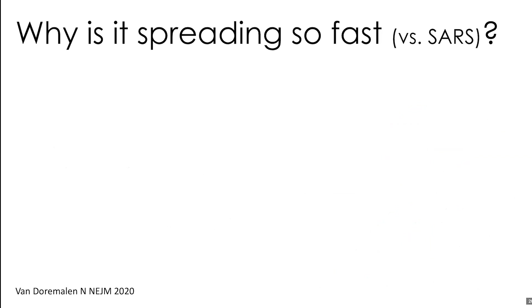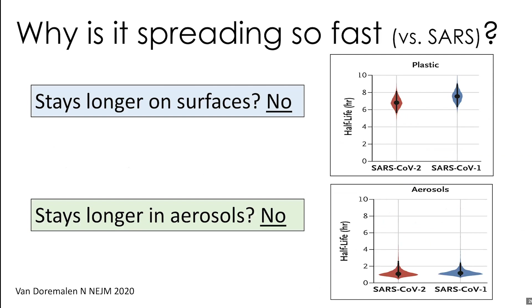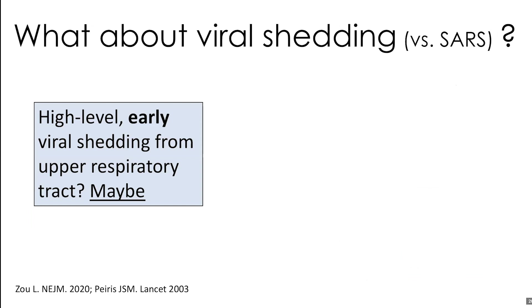Why is this coronavirus spreading so fast compared to the original SARS? A study looked at whether it stays on surfaces longer than the original SARS. The half-life on plastic is really no different, so this is probably not the primary issue. The same study looked at whether it retained in aerosols longer, and again there was no real difference between SARS-CoV-2 and SARS-CoV. Some recent studies looked at viral shedding, and there seems to be a difference. They found high-level early viral shedding from the upper respiratory tract in patients with COVID-19.